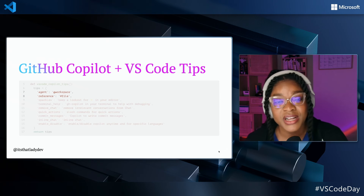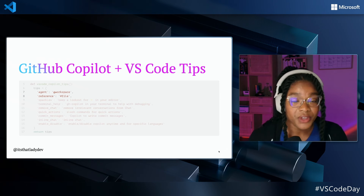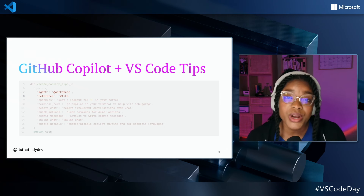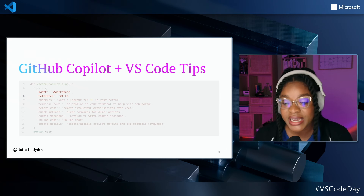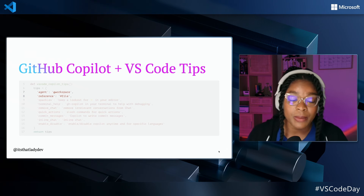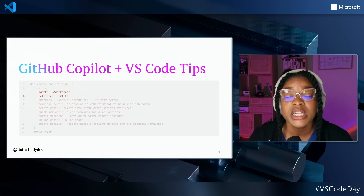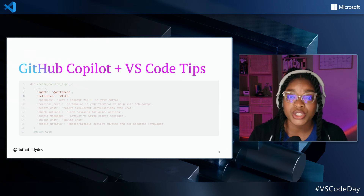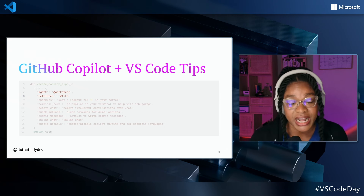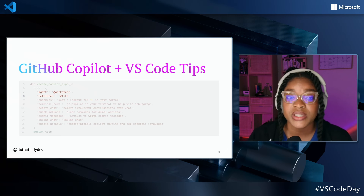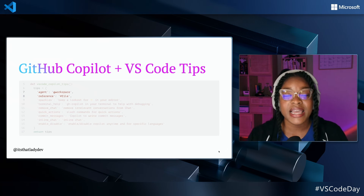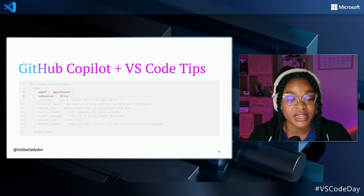In VS Code, we have something called agents. We have a few agents, one of which is the @workspace agent. The @workspace agent is aware of your entire directory, so it gives GitHub Copilot more information to provide you with the best answer. We also have a way for you to reference specific files with Copilot Chat — you can do hash-file, a pop-up comes up, and you can select a file to ask questions about.